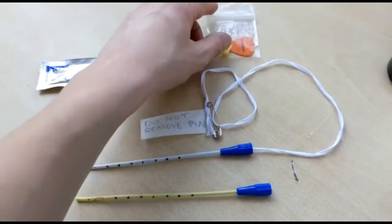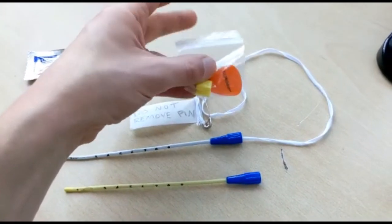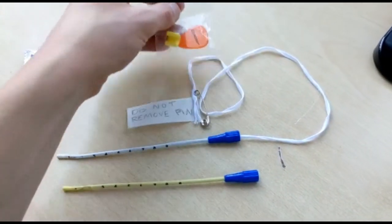The clip provided can be used to secure the bridle string to the NG tube. The clip alone is not enough to secure it and the string will need to be tied as well.